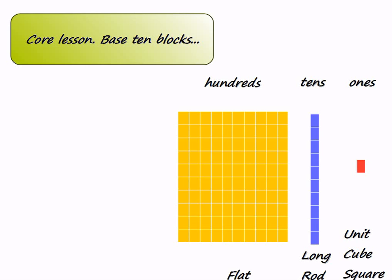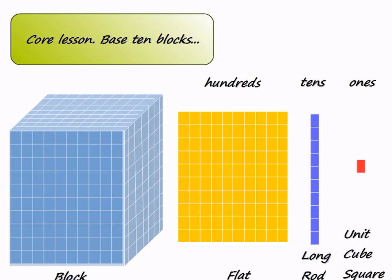It also takes 100 units to make one flat, so a flat is 100 times bigger than one unit. Finally, we have one block serving as the representation for the thousands place. One block is made of 10 flats. It is also equal to 100 longs, or 1000 units.